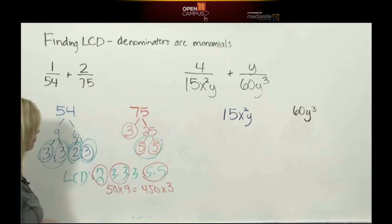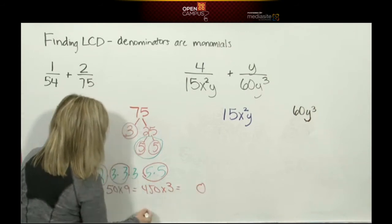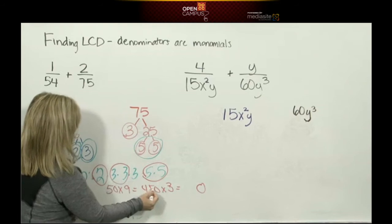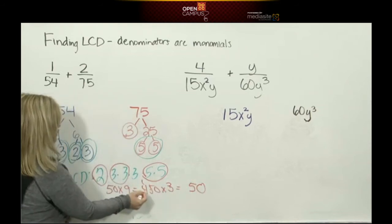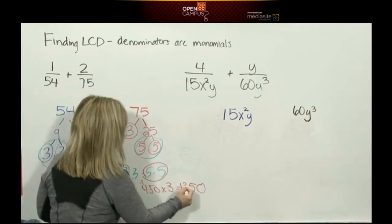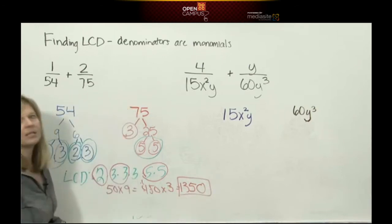So I'll put my placeholder zero at the end. I know 3 times 5 is 15, I'll put down my 5, I'll carry my 1. 3 times 4 is 12 and 1 is 13. So your least common denominator of 54 and 75 is 1,350.